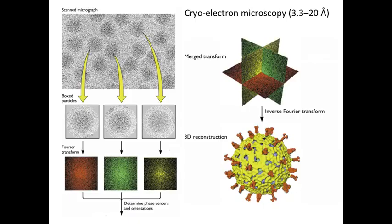The electron micrograph gives you an overall view of the particle — you can see which ones are similar and which ones are different. But we don't get any structural information, and to do that you need to use other methods.